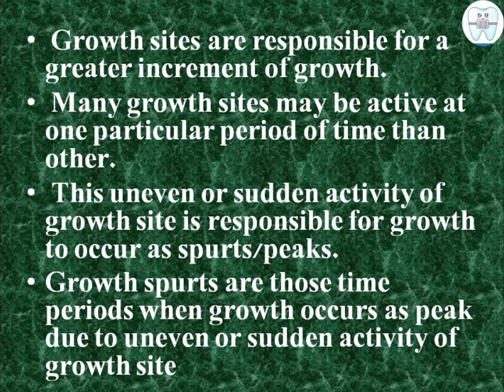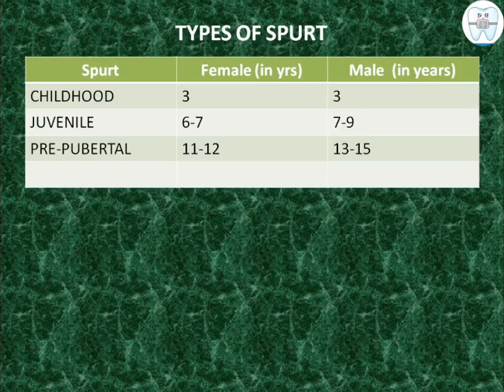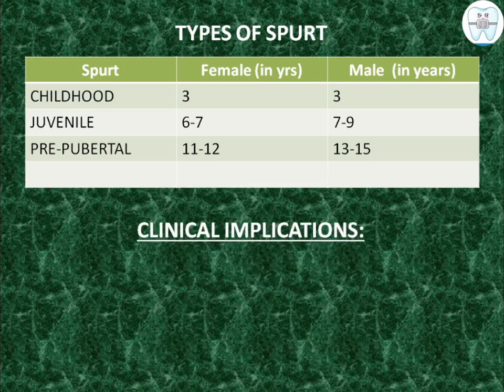There are three types of growth spurts: childhood, juvenile, and pre-pubertal. The age at which these occur varies between males and females. Childhood growth spurt occurs at three years in both. Juvenile growth spurt occurs at six to seven years in females and seven to nine years in males. Pre-pubertal growth spurt occurs at 11 to 12 years in females and 13 to 15 years in males.